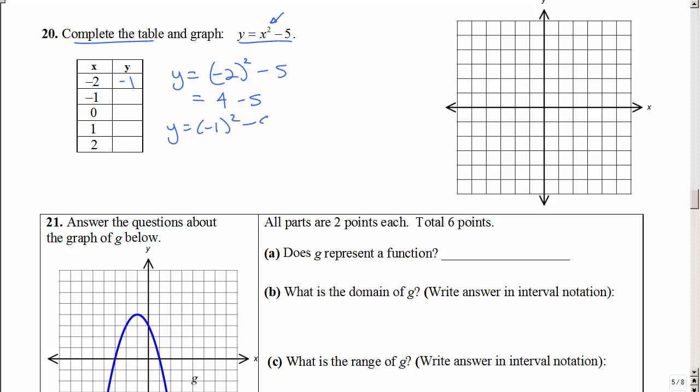Then I'm going to plug in negative 1. Let's see, I'm going to plug in 0. Let's see, I'm going to plug in 1 and 2, then I'm going to plot those points, then play connect the dots. Parabola quadratic function.